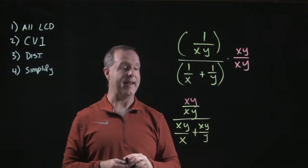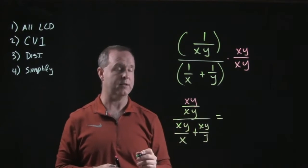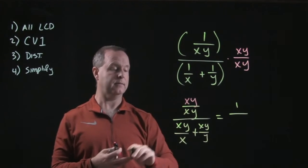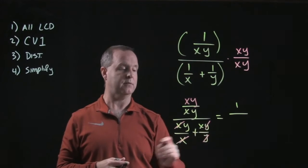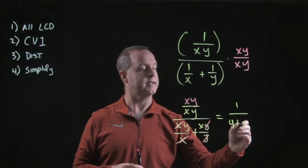I can simplify that out. I see that my numerator, xy over xy, is just one. My denominator, my x's cancel, my y's, well, they don't cancel. They factor. And I'm left with y plus x. And there's my simplified version.